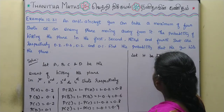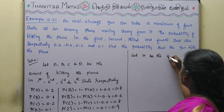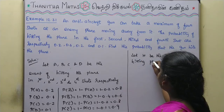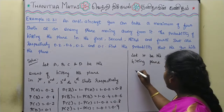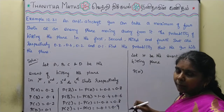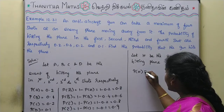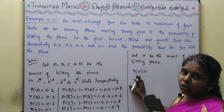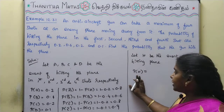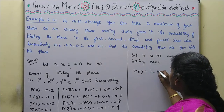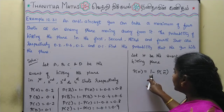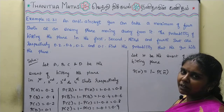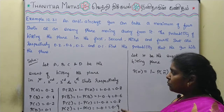Let H be the event of hitting the plane. Then P(H) = 1 − P(H̄). P(H̄) is the event that all shots miss — that is, the plane is not hit by any of the 4 shots.